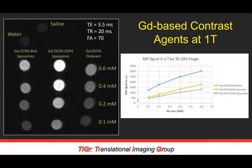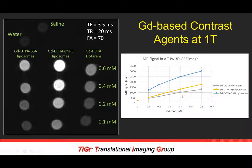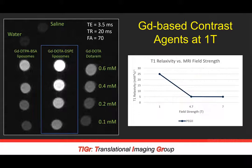For MRI, higher signal is expected with higher gadolinium concentration. Looking at the relaxivity and performance of this agent at one Tesla, we can see that the relaxivity — the enhancement as a result of T1 changes in the MR environment — is much higher at a field strength of one Tesla compared to higher field strengths of 4.7 and 7 Tesla.